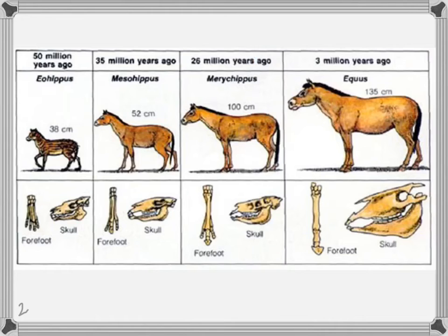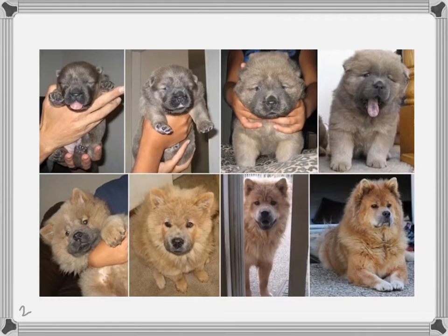Biological evolution is simply the fact that species and populations change over time, and that those changes are passed on to new generations. This is different from the changes an individual goes through in their lifetime — that's growth and maturation.